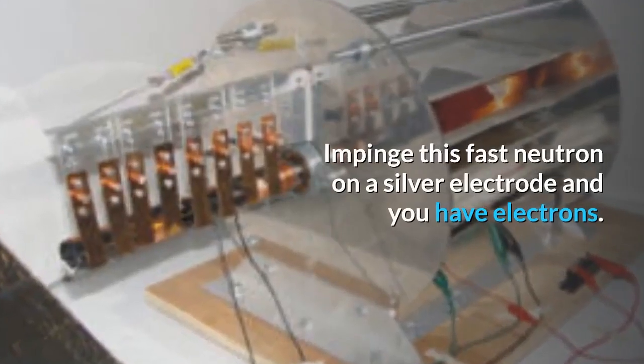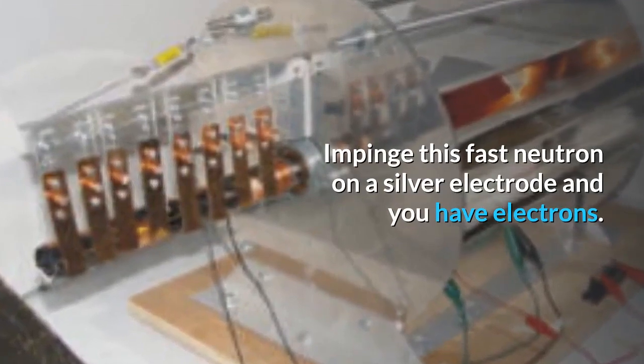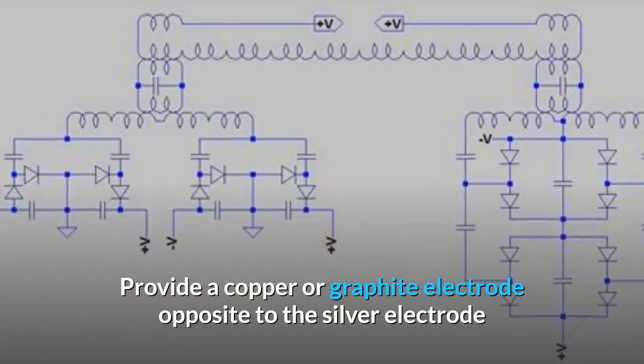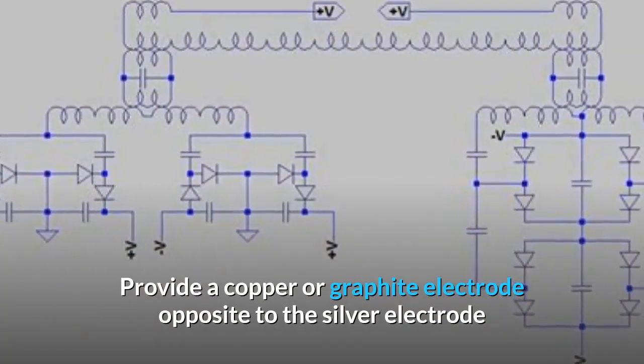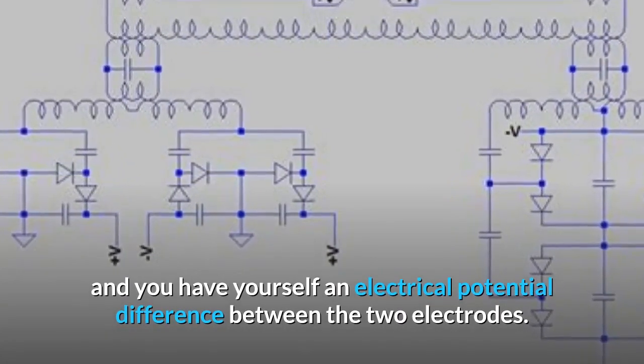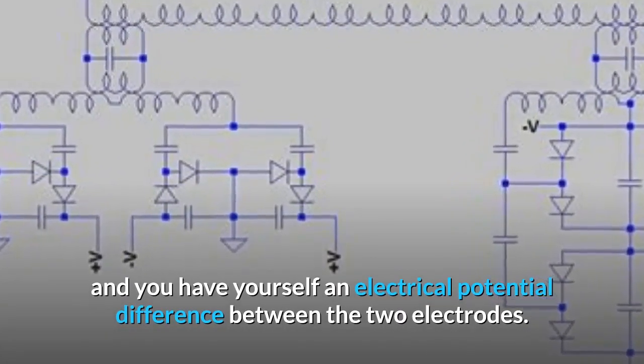Impinge this fast neutron on a silver electrode and you have electrons. Provide a copper or graphite electrode opposite to the silver electrode and you have yourself an electrical potential difference between the two electrodes.